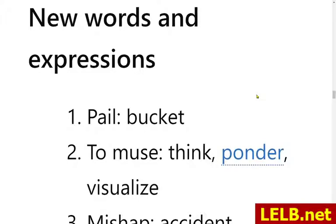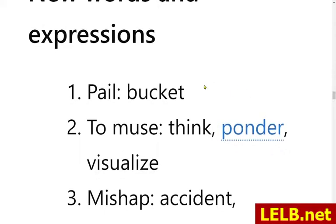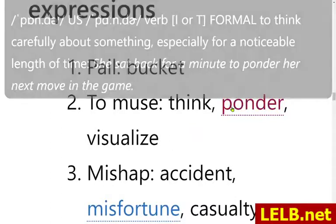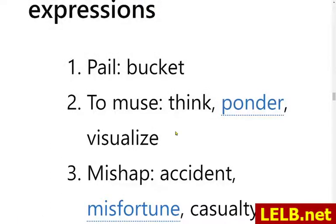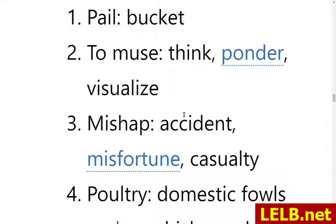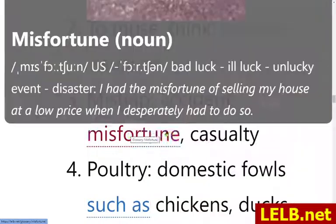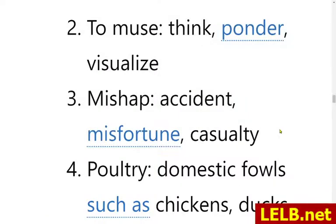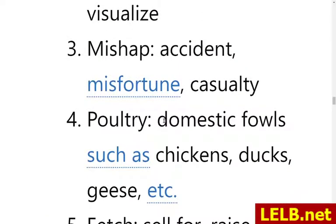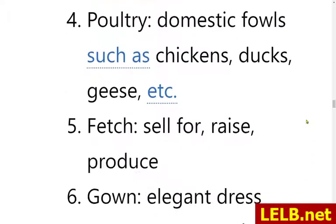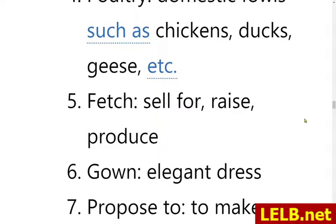New words: Number one — pail means bucket. Number two — to muse means to think, ponder, or visualize. Three — mishap: accident, misfortune, and casualty. Four — poultry: domestic fowls such as chickens, ducks, geese, etc. Five — fetch: here in this context means to sell for, or raise, or produce.